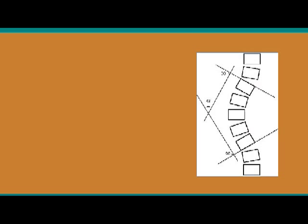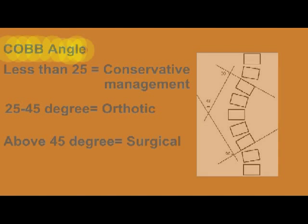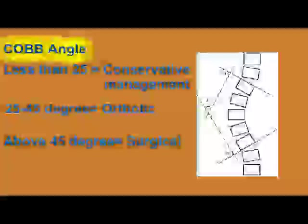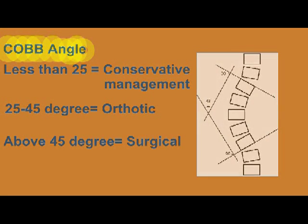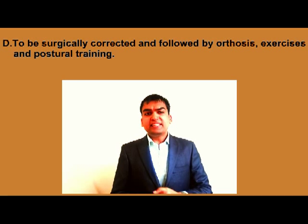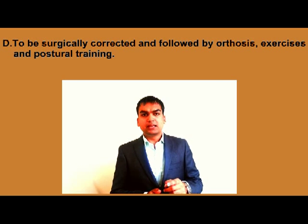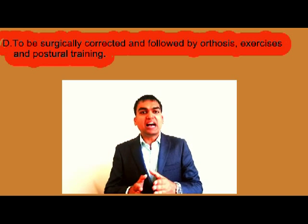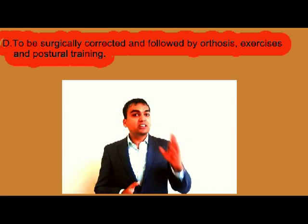Let me explain the Cobb angle first. In the normal scenario, if the Cobb angle is below 25 degrees, conservative treatment is preferred. Higher degrees can lead to neurological as well as respiratory complications, which is why surgical treatment may be needed. However, surgeries are usually held on till the age of 20 years because bone growth is not yet complete. So answer D — surgery — would not be the right answer here.